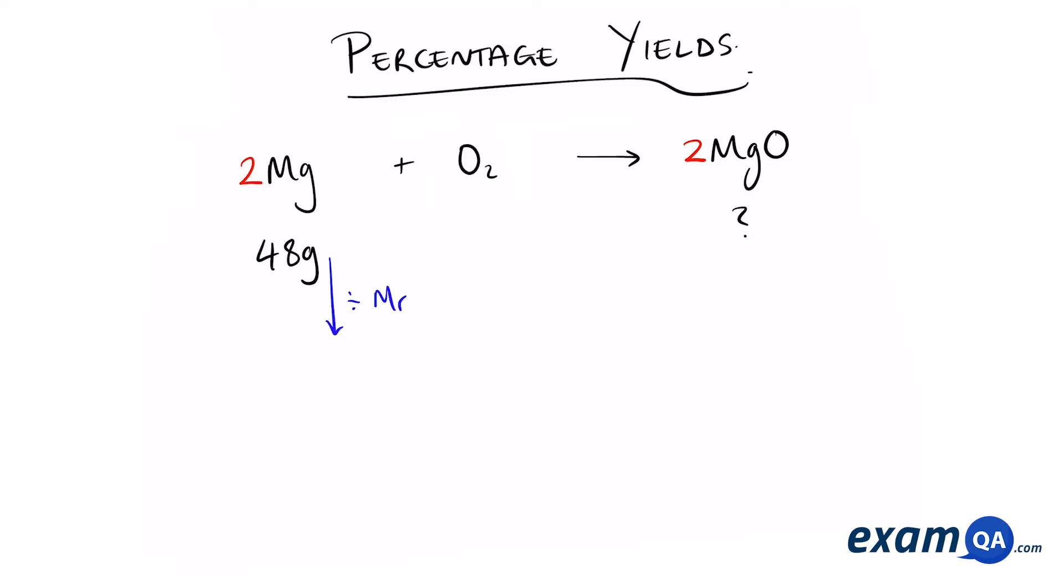So first, you're going to divide by the MR of magnesium which is 24. That gives you 2 moles. Next, we're going to compare the ratio of magnesium to magnesium oxide. So 2 to 2 means it's a 1 to 1 ratio, so the moles will be the same. Finally, we're going to times it by the MR of magnesium oxide which is 40, and that gives us a final answer of 80 grams.